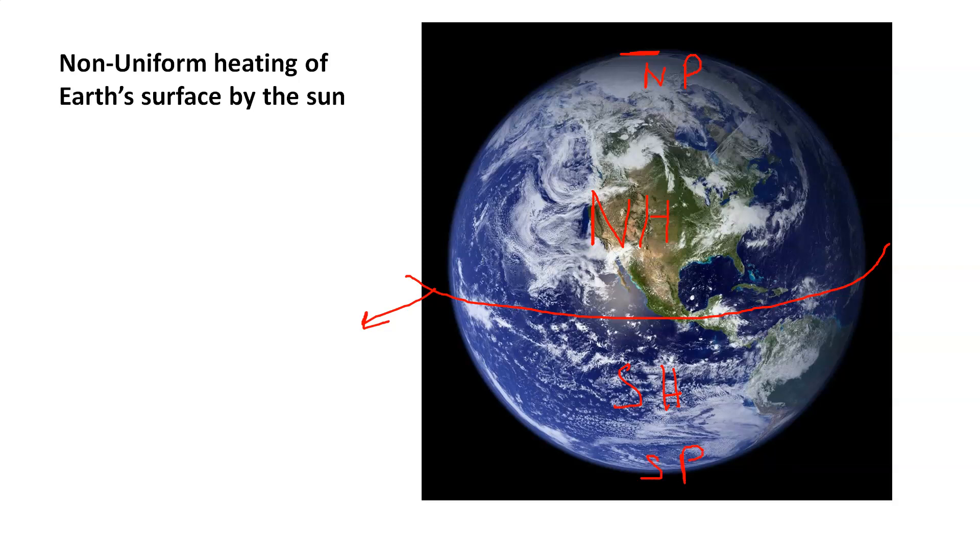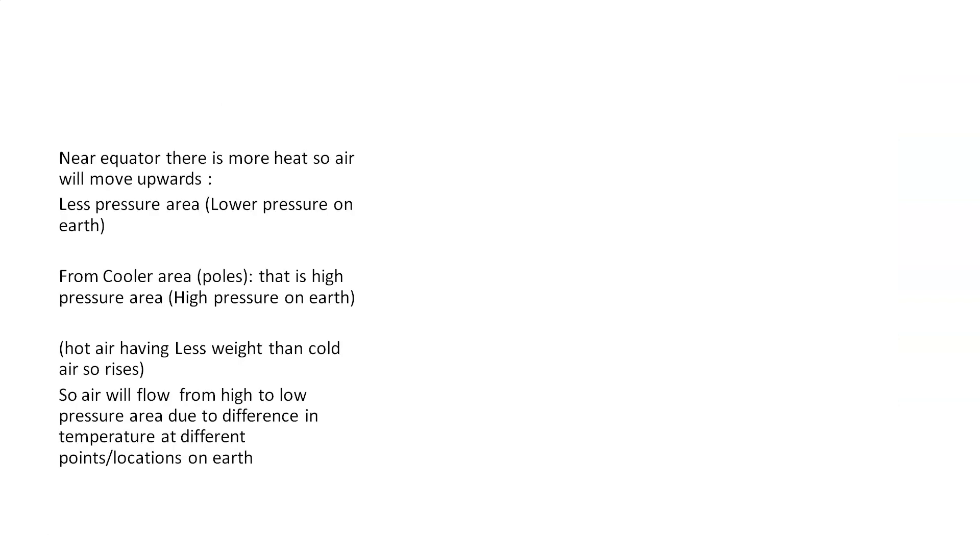So what is basically north pole? It lies 90 degrees on the north of the equator and south pole lies 90 degrees on the south of the equator. So we have equator which cuts our earth into two parts, northern hemisphere and southern hemisphere. And we have two poles, north pole and south pole. But why have we discussed the equator and the poles?